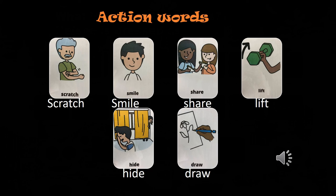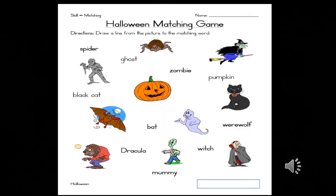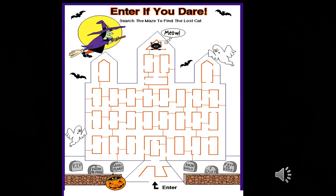Slide 18: Halloween matching game. Directions — draw a line from the picture to the matching word. Slide 19: 'Enter if you dare' — search the maze to find the lost cat.